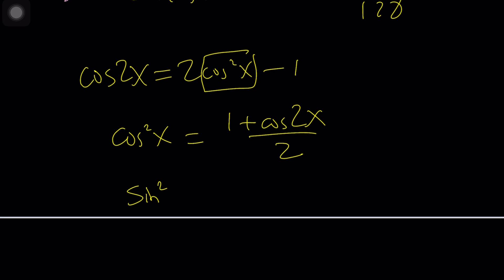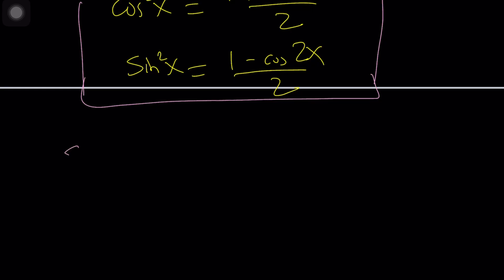And similarly sine squared can be written as 1 minus cosine of 2x over 2. These are very important formulas, they're called power reduction formulas. Let's say you're integrating cosine squared you can definitely use this. You can even use this for higher powers like fourth power, eighth power.